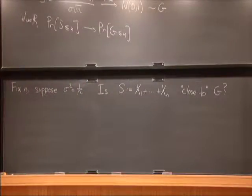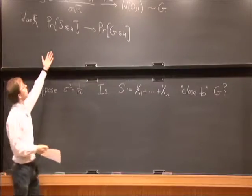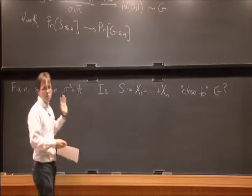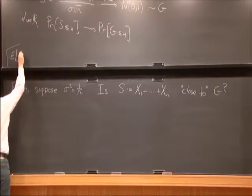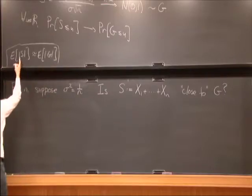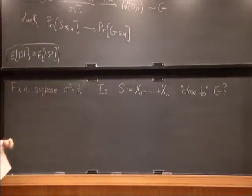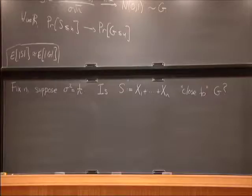It has the right mean and the right variance by assumption, so we'd hope it's close to a Gaussian. How do you measure distance? There are different things you might want. One popular notion is that for all u, the difference between the two CDF values is bounded by something independent of u. But you might also want something like E[|f(S)|] close to E[|f(G)|], which doesn't actually follow from CDF closeness — something stronger is needed.